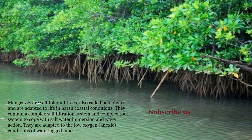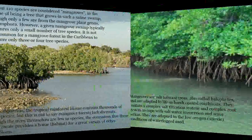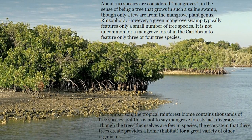They contain a complex salt filtration system and complex root system to cope with salt water immersion and wave action. They are adapted to the low oxygen conditions of waterlogged mud. About 110 species are considered mangroves, in the sense of being a tree that grows in such a saline swamp, though only a few are from the mangrove plant genus Rhizophora. However, a given mangrove swamp typically features only a small number of tree species.